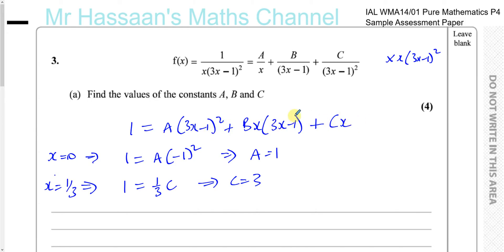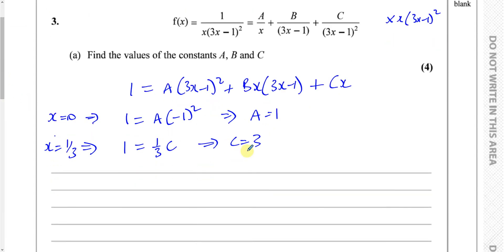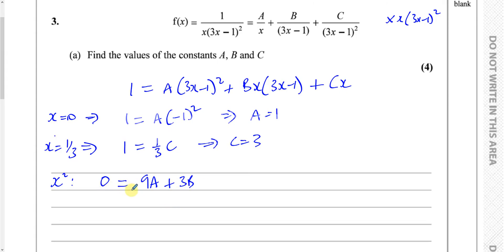There's no substitution that will isolate B on its own, so we compare coefficients. Comparing the x squared coefficients on both sides: on the left there are no x squared terms, so the coefficient is 0. On the right, expanding A times 3x minus 1 squared gives 9A as the x squared coefficient, and expanding B times x times 3x minus 1 gives 3B as the x squared coefficient. There's no x squared from the C term. So we have 0 equals 9A plus 3B. Since A equals 1, we get 3B equals minus 9, so B equals negative 3.